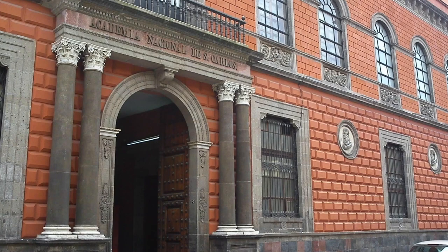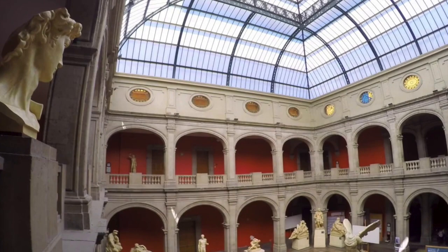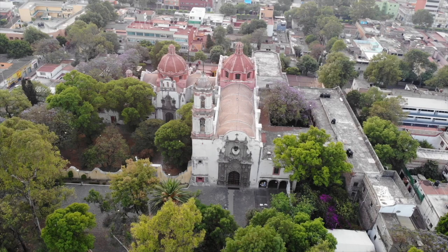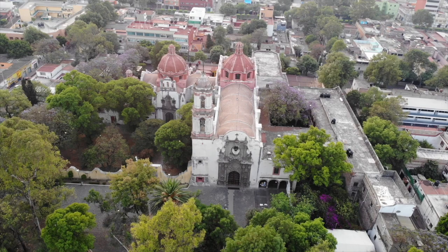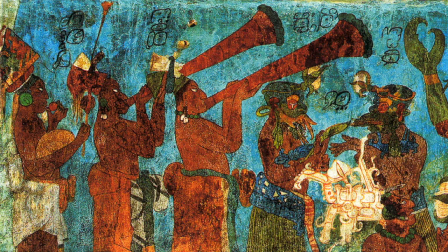Rufino Tamayo initially learned how to paint at the Academy of Fine Arts in Mexico City, where he studied from 1917 to 1921. However, he was dissatisfied with the conservative academic approach to art taught there, and so he left the Academy to pursue his own artistic vision. Tamayo's interest in pre-Columbian and indigenous Mexican art also played a significant role in his artistic development. He studied the art and traditions of indigenous communities throughout Mexico, incorporating elements of their art and culture into his work.